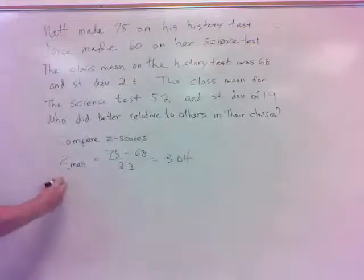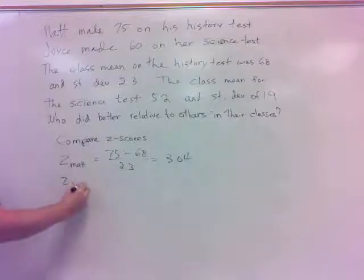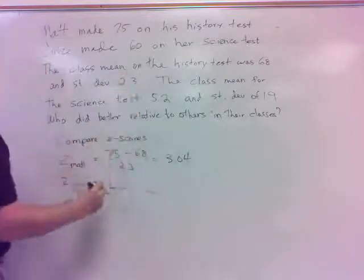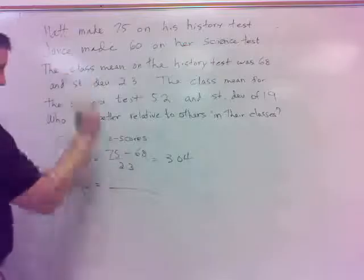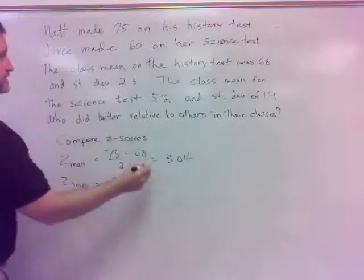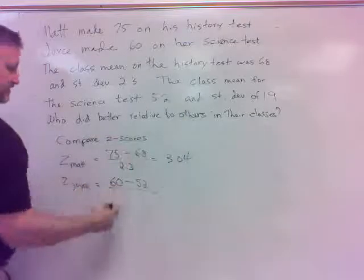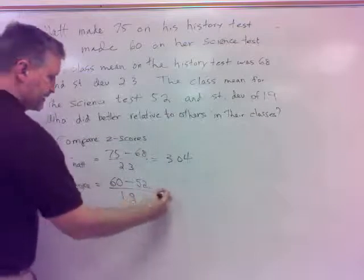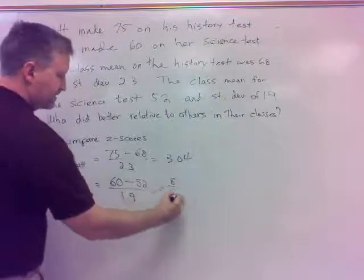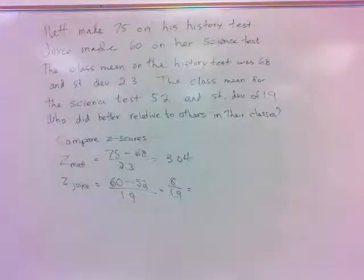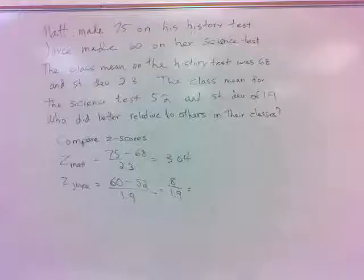The z-score of Joyce: her value, 60, minus the mean for the science test, 52, divided by the standard deviation of the science test, 1.9. That's 8 divided by 1.9, which is 4.21.